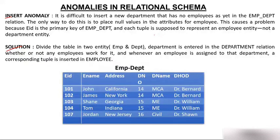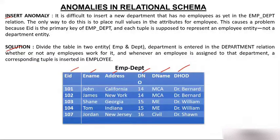You can see a table in front of you. The table name is emp_department. This table has columns holding information of both employee and department: employee ID, employee name, address, department number, department name, and HOD. For example, row one is John, his address is California, department number is 14, department name is MCA, and the HOD is Dr. Bernard.